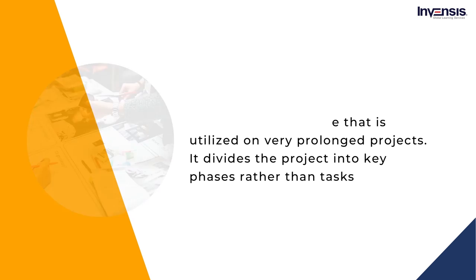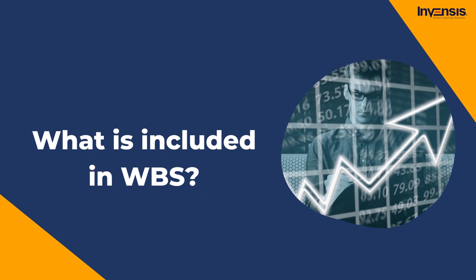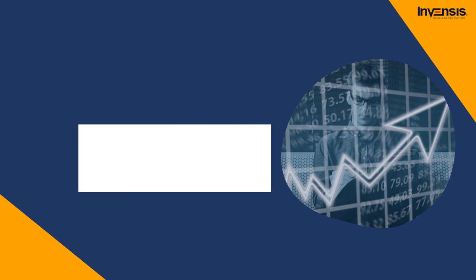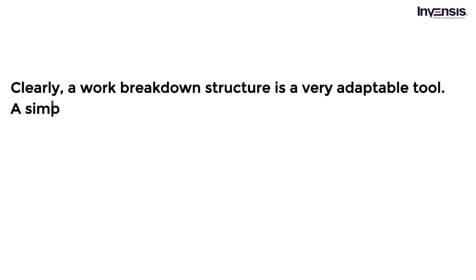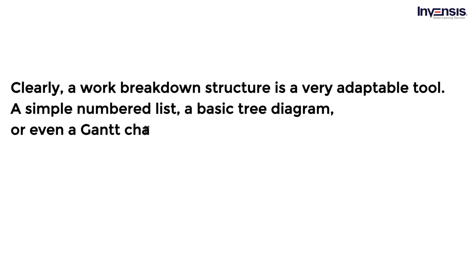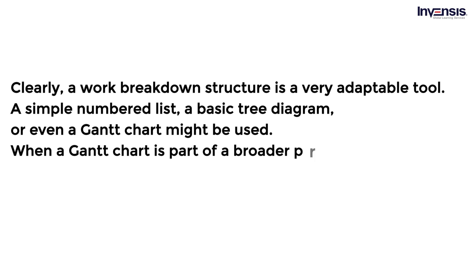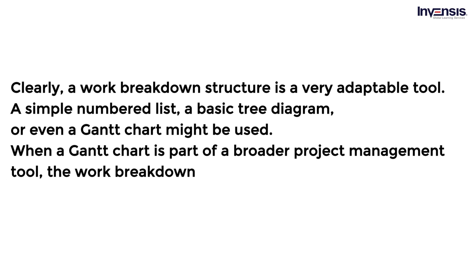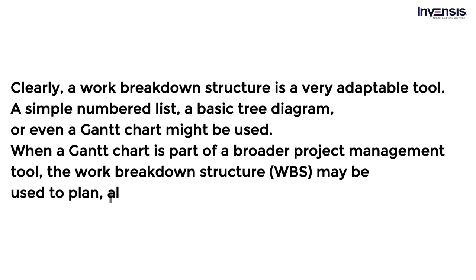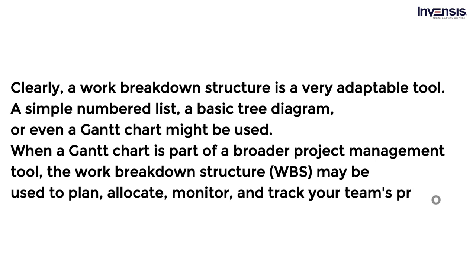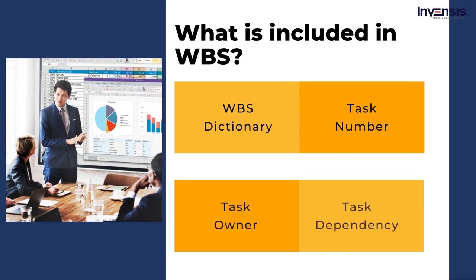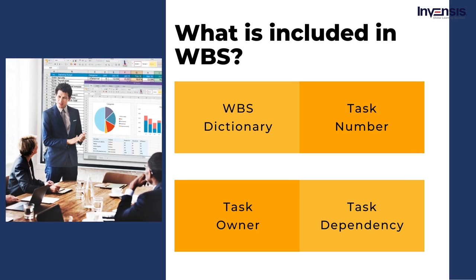A work breakdown structure is a very adaptable tool. A simple numbered list, a basic tree diagram, or even a Gantt chart might be used. When a Gantt chart is part of a broader project management tool, the work breakdown structure may be used to plan, allocate, monitor, and track your team's progress. To track the progress of a project, WBS includes a few terminologies: WBS Dictionary, Task Number and its Description, Task Owner, Task Dependency, Cost of Task, Estimated Timelines, and Task Status.